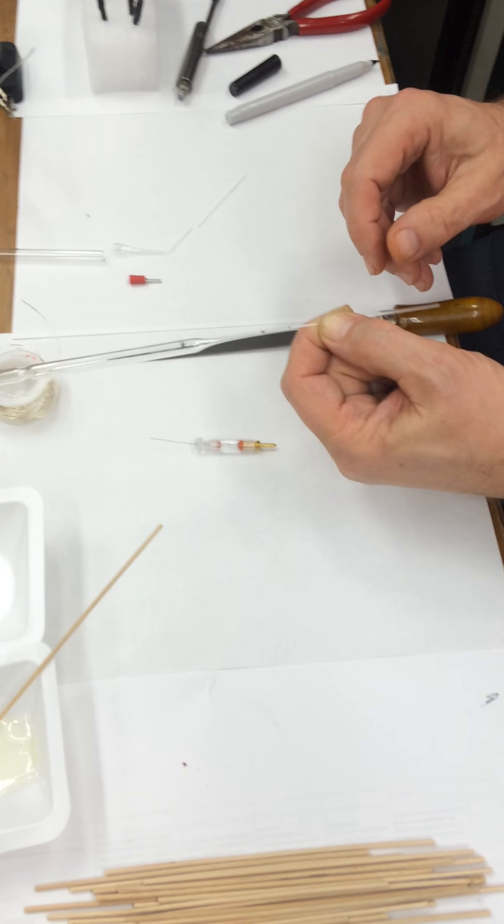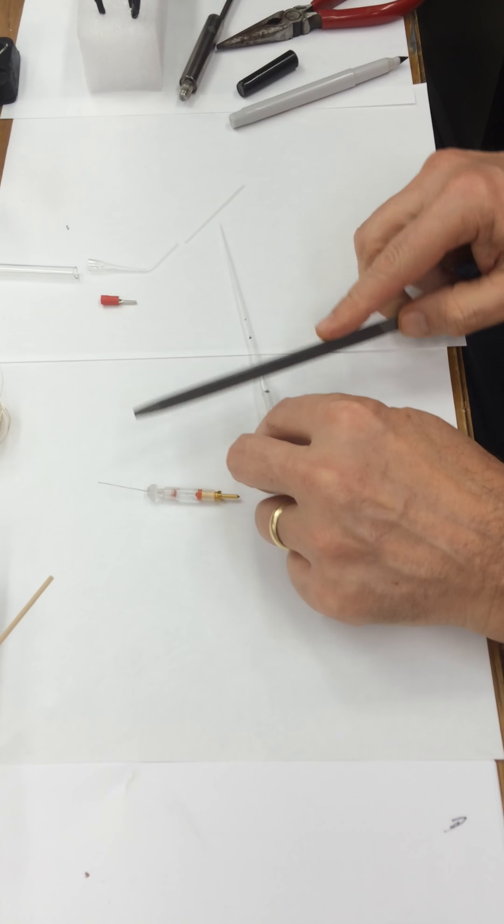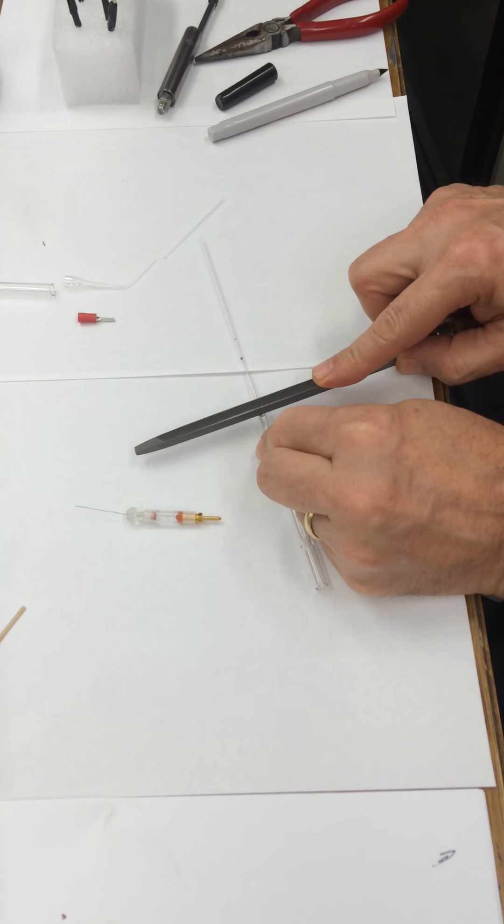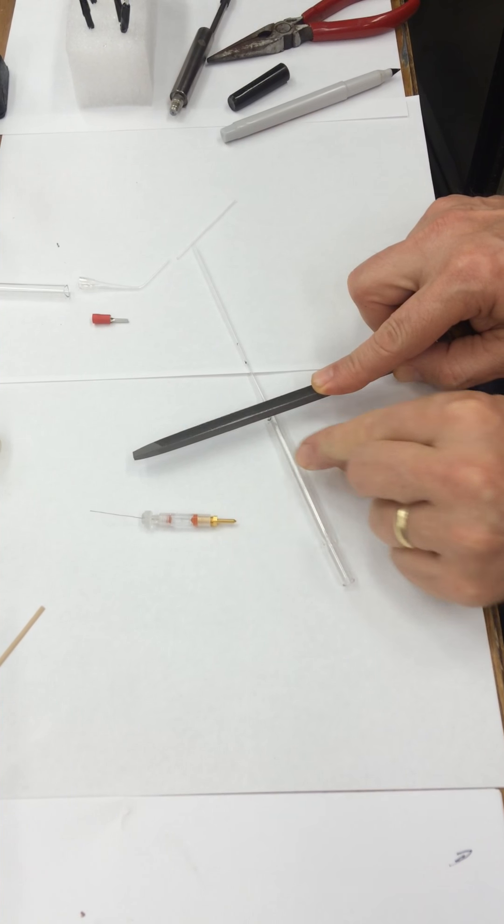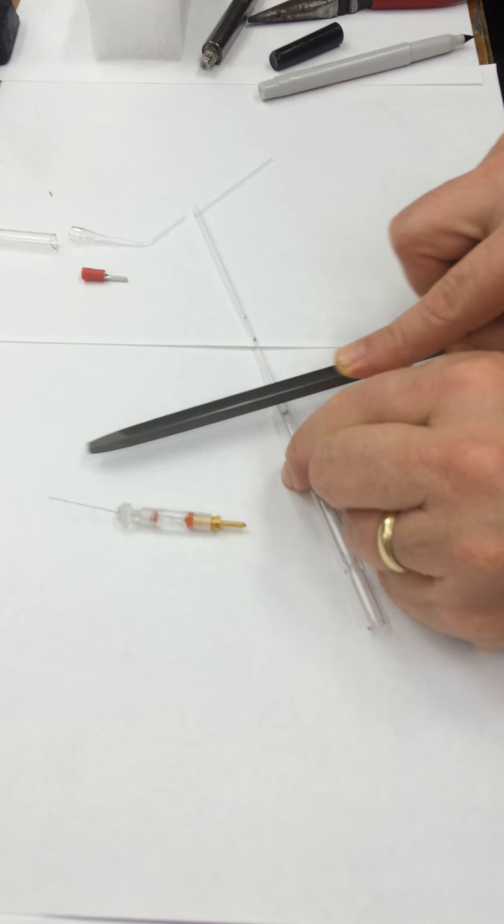The way we break them is to etch them with a file. So all one has to do is to go back and forth and then rotate the glass around and keep doing it like that.